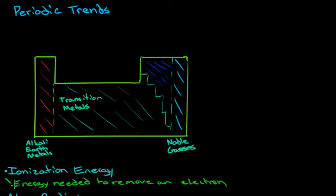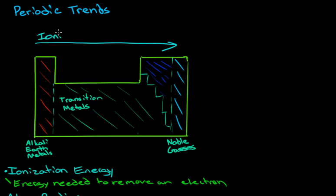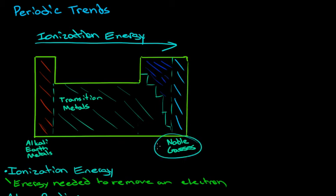The ionization energy is the energy required to remove an electron from its atom. As we move left to right, the ionization energy will increase. The reason for this is that all of the atoms moving across the periodic table all want to be noble gases — they all want to have a full octet, they all want to have full shells.